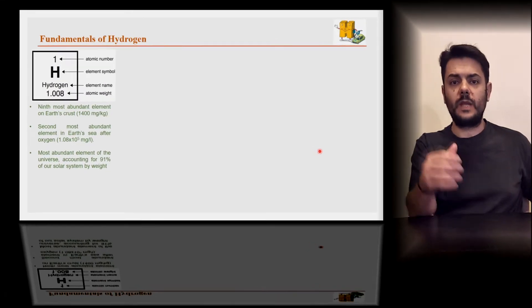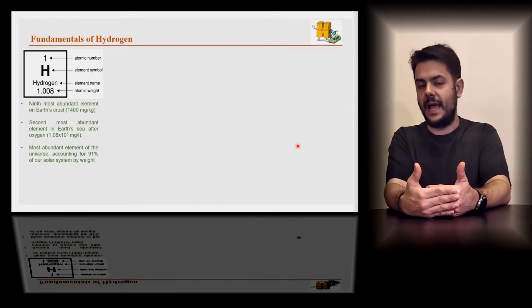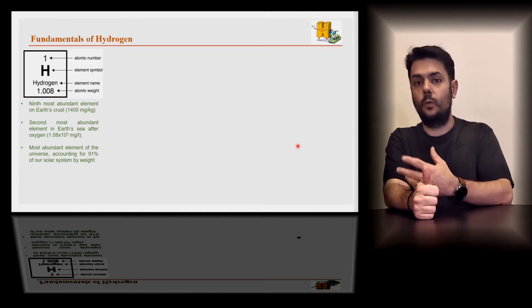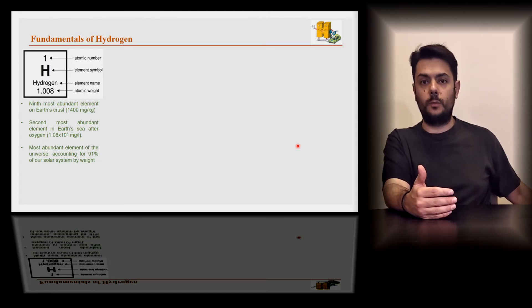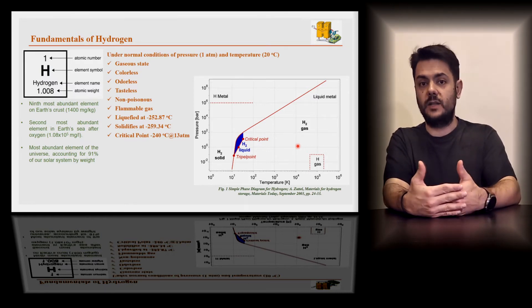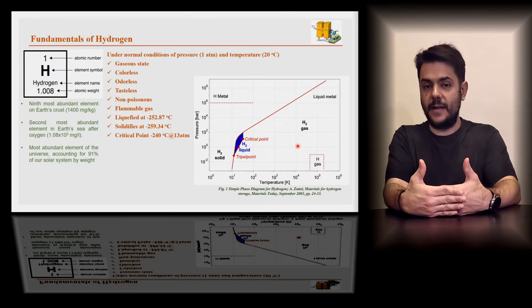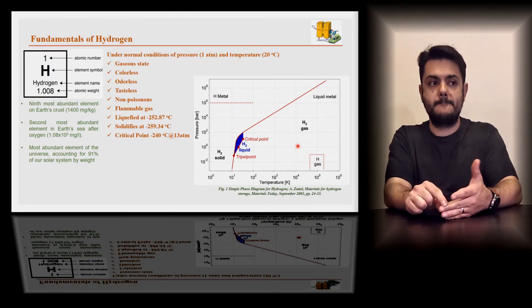To begin with, the question is, why hydrogen? And the answer is pretty simple. Hydrogen is a very abundant element. It's literally everywhere in the universe, from the air, earth, sea, water, everywhere. Besides that, when it comes to normal conditions of pressure and temperature, that means one atmosphere and 20 degrees centigrade, hydrogen is in gas state. Also hydrogen is odorless, tasteless, and colorless.